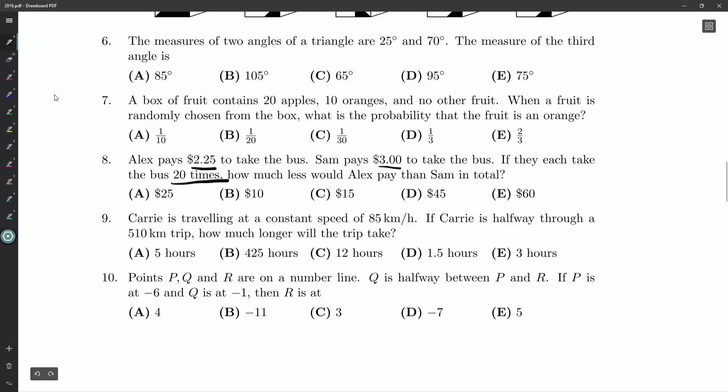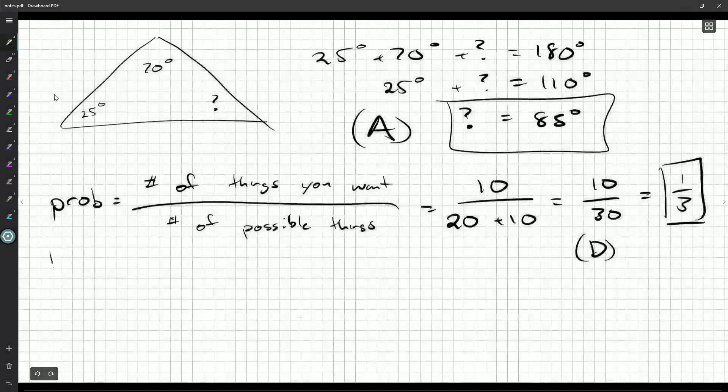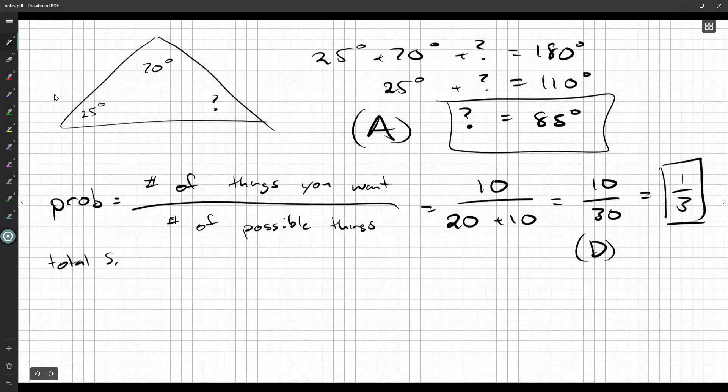I can think of two ways to do this question. We could figure out the total Sam pays. That would be 20 bus trips times $3, which is a total of $60.